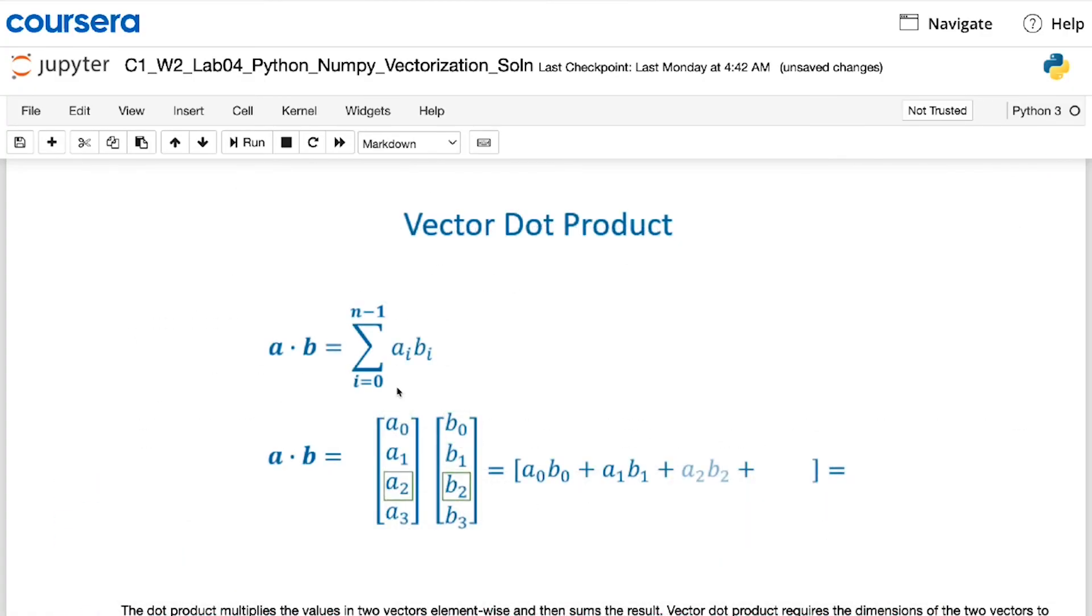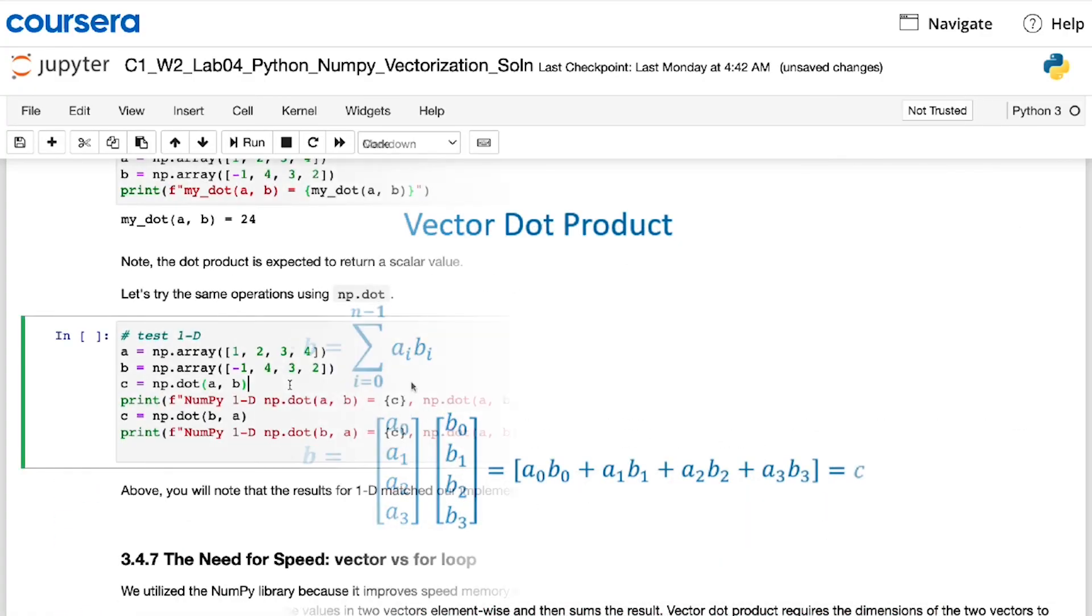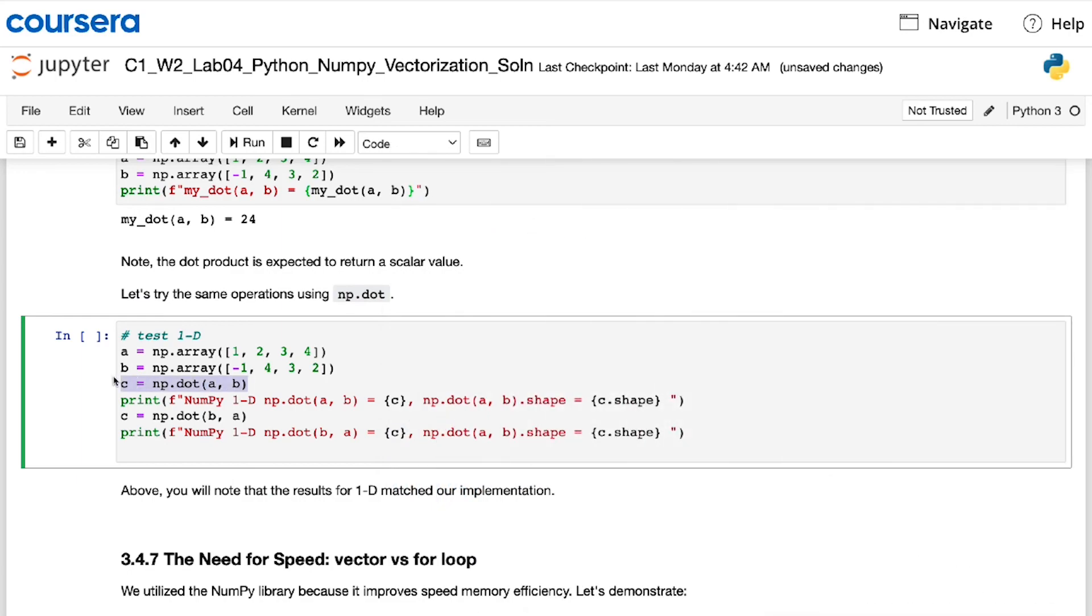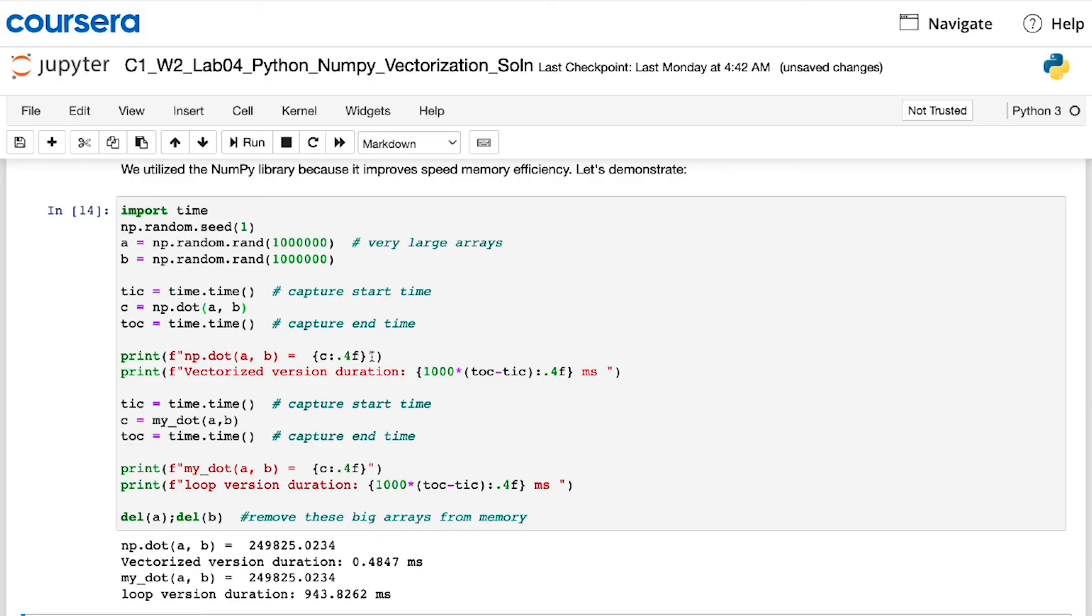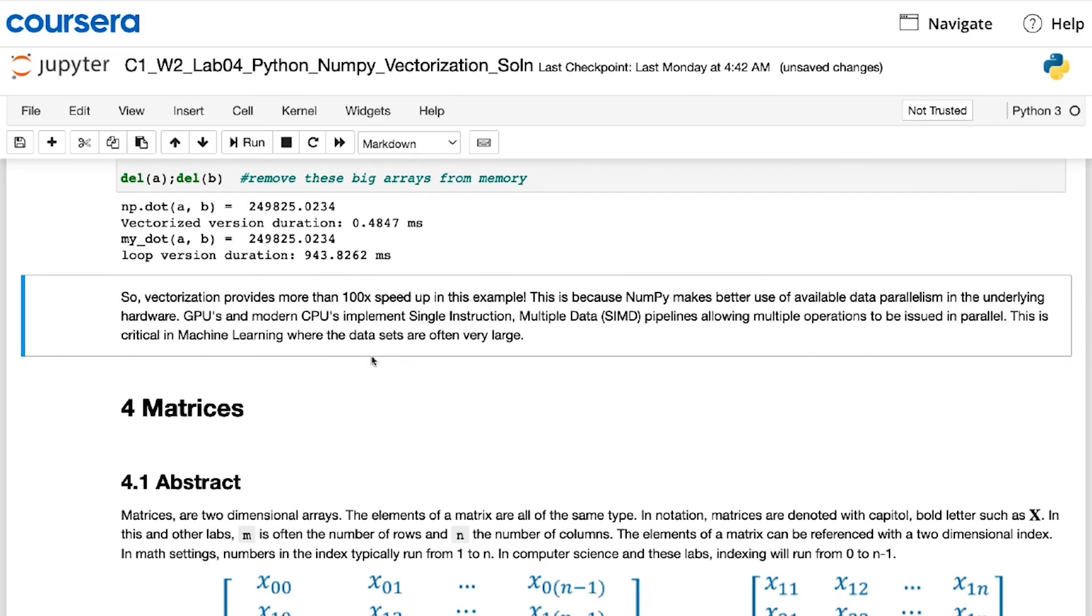And you'll also see how to take the dot product of two vectors using a numpy function called dot. And you also get to see how vectorized code, such as using the dot function, can run much faster than a for loop. In fact, you get to time this code yourself and hopefully see it run much faster.